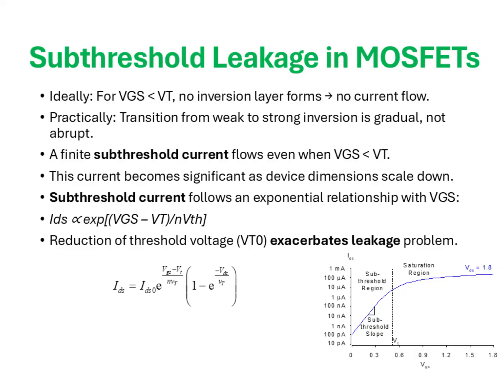This current arises due to the diffusion of minority carriers in the channel and its magnitude increases exponentially with VGS. Mathematically, this current can be expressed as ID proportional to exp((VGS − VT) / NVTH), where VTH is the thermal voltage and N is the sub-threshold swing factor. As MOSFET dimensions continue to scale down, this leakage current becomes increasingly significant, because the reduction of threshold voltage inherently lowers the barrier for carrier injection in the weak inversion regime. As a result, leakage power becomes a dominant component of overall power consumption, especially in modern nanoscale devices where billions of transistors remain in standby mode.